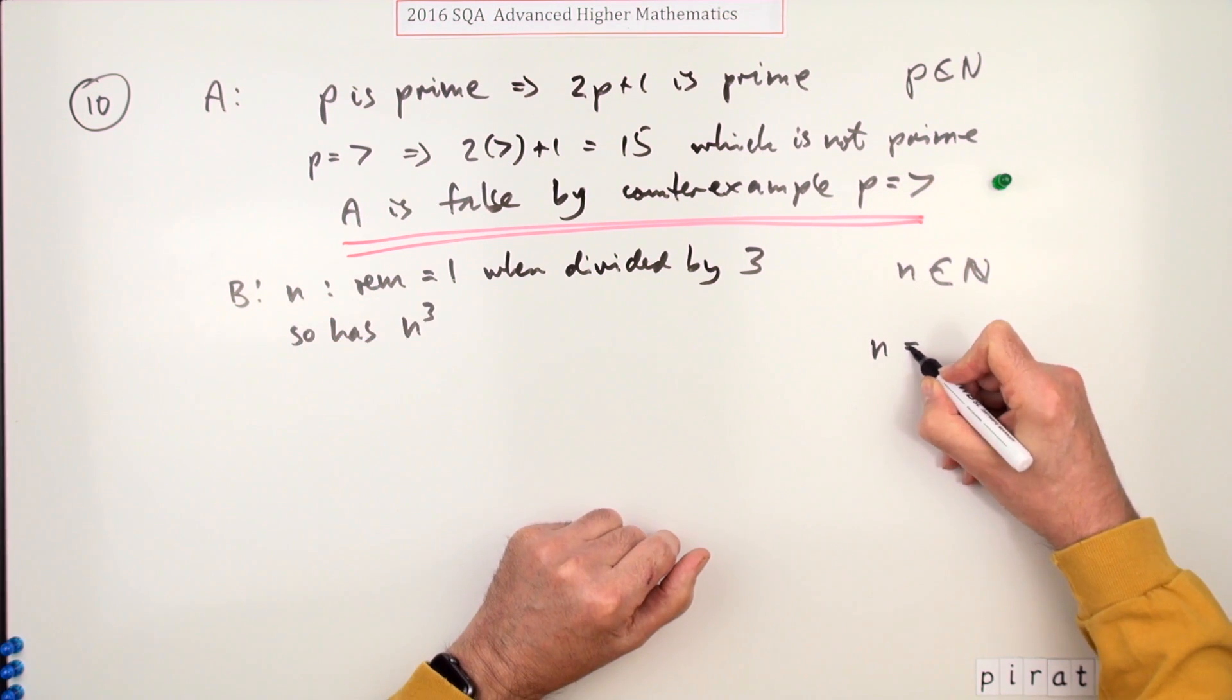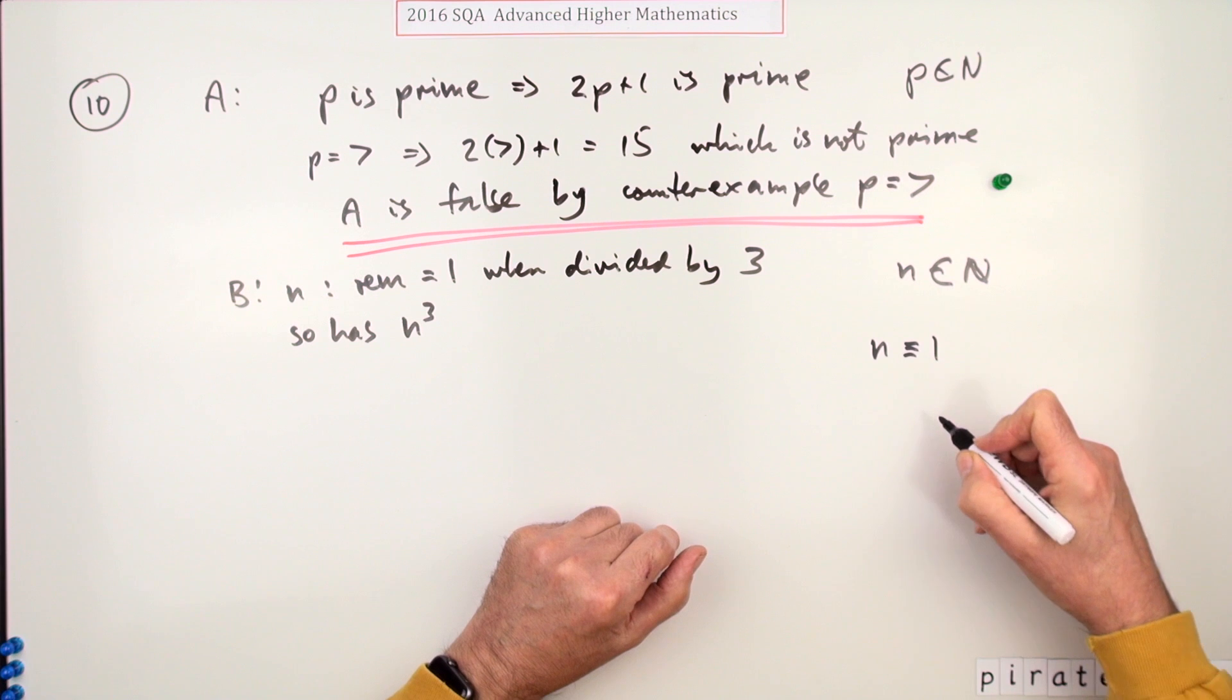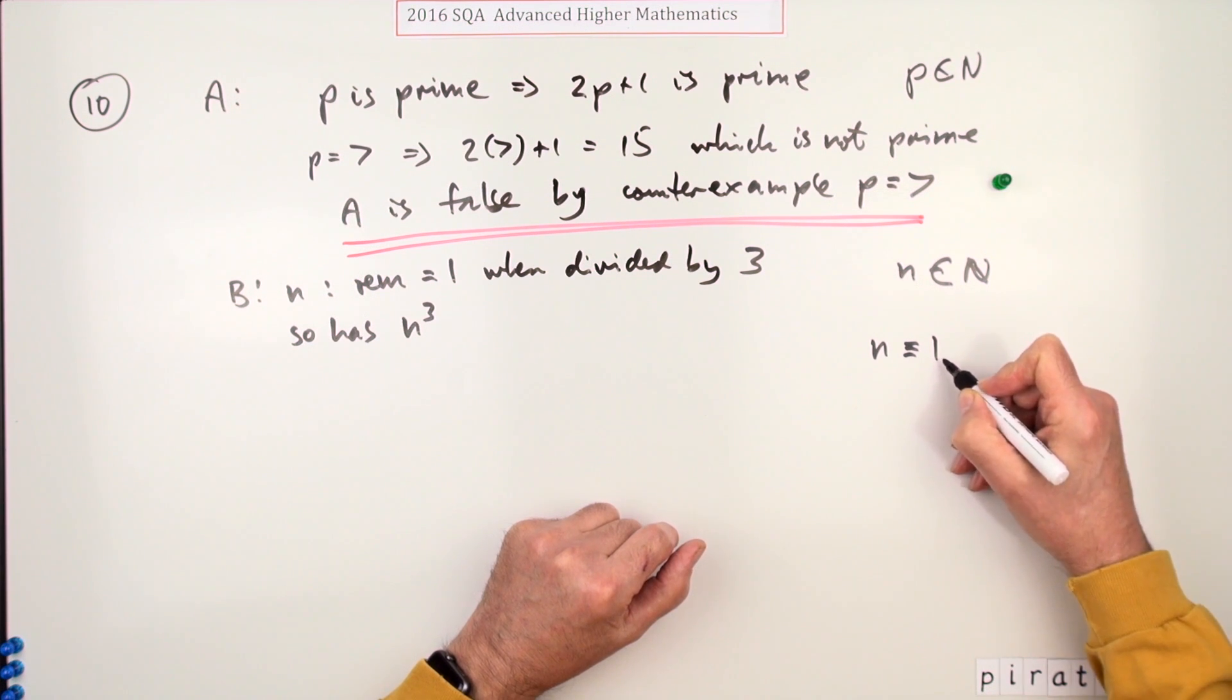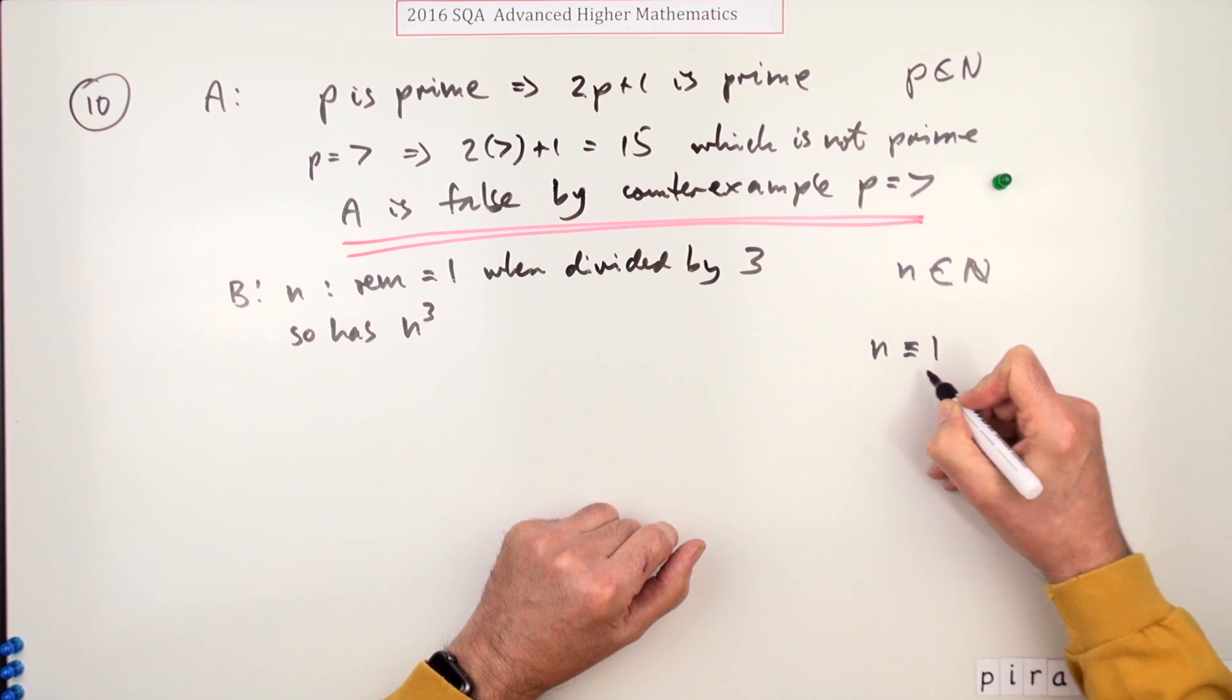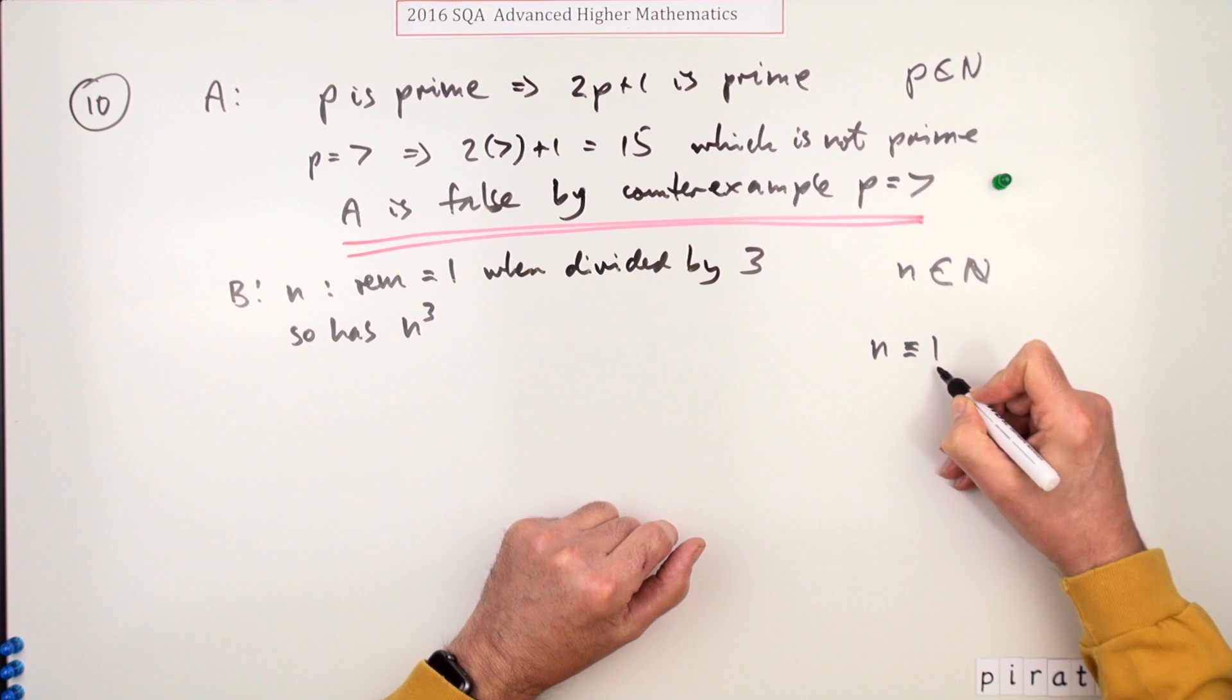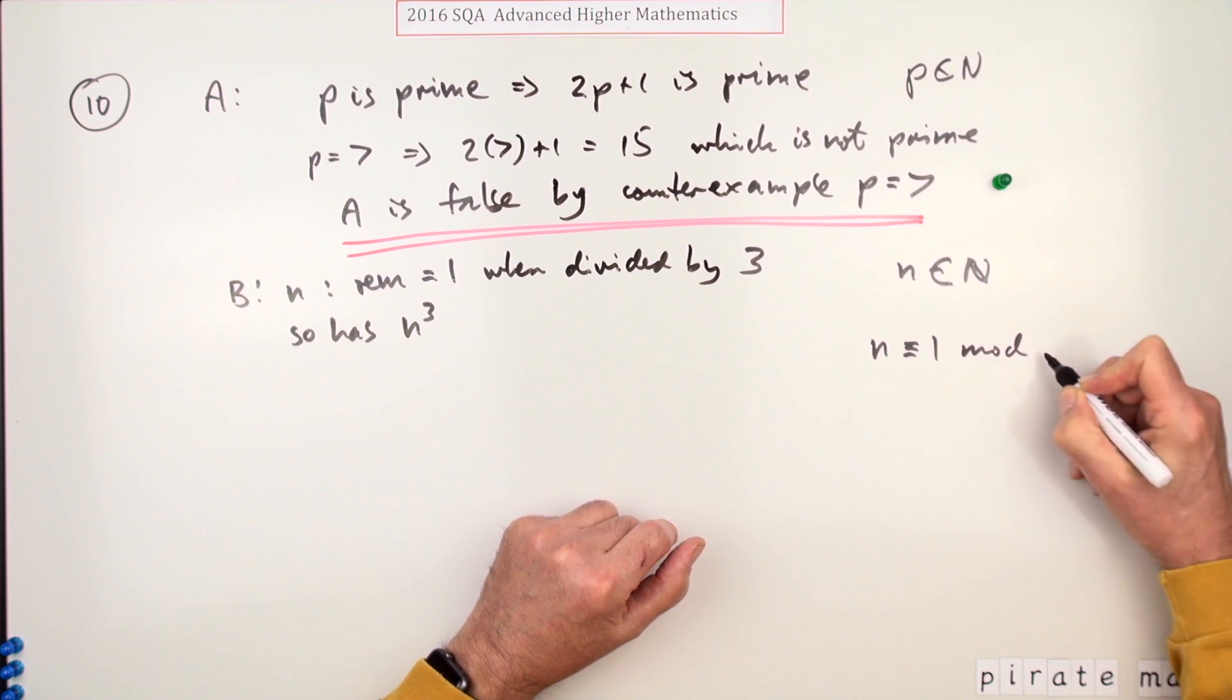You would say this number n, if it's got a remainder of one when divided by three, it means all the numbers n which give a remainder of one when divided by three are said to be n is congruent to one - they're all equivalent to one under modulo three.